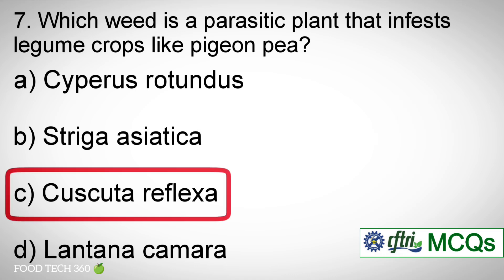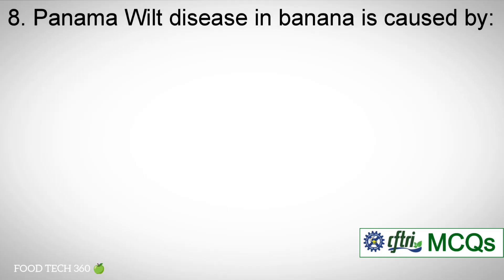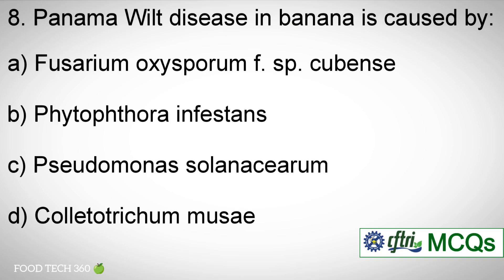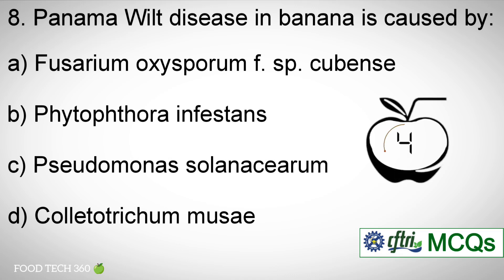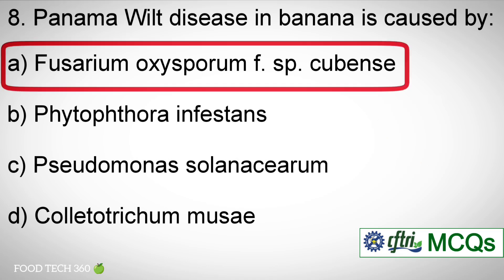Question number eight: Banana wilt disease in banana is caused by — options: a) Fusarium oxysporum f. sp. cubense. b) Phytophthora infestans. c) Pseudomonas solanacearum. d) Colletotrichum musae. Correct answer: a) Fusarium oxysporum f. sp. cubense.